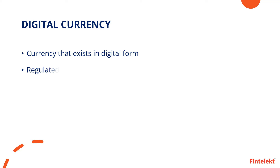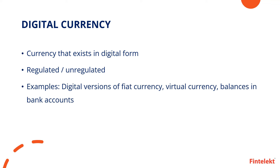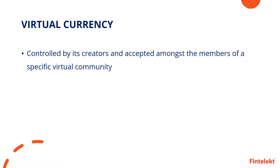A digital currency is a broad term used to describe all forms of currency that exist in digital form. These can be regulated as well as unregulated. Some examples include digital versions of fiat currency, virtual currency, and balances in bank accounts. A virtual currency is a type of digital currency typically controlled by its creators and accepted amongst the members of a specific virtual community. It is generally unregulated and may not have value outside its virtual community.